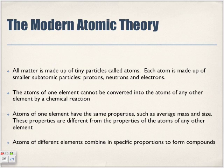According to the modern atomic theory, all matter is made up of tiny particles called atoms. Each atom is made up of smaller subatomic particles called protons, neutrons, and electrons. Similar to the first two of Dalton's theories.